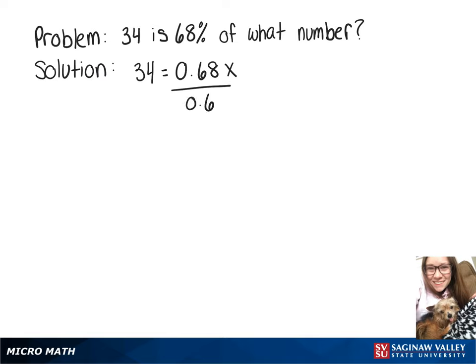To solve for x, we'll divide both sides by 0.68. That'll get x by itself, and we'll have x is equal to 50. Take care. Thank you.